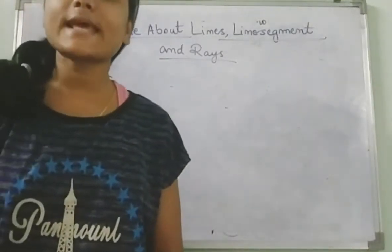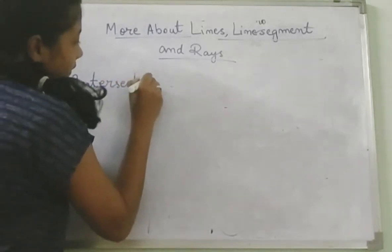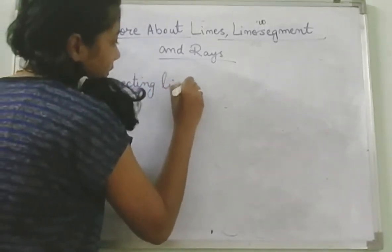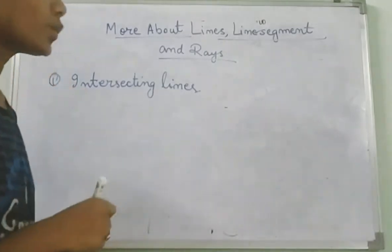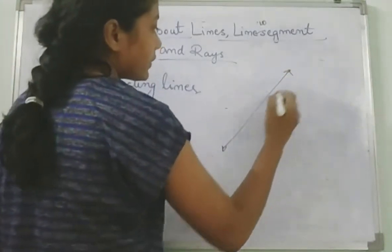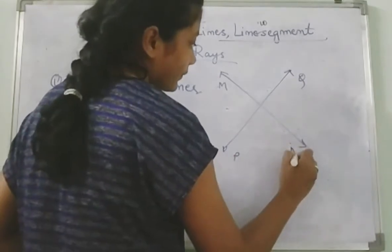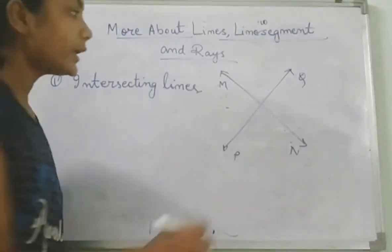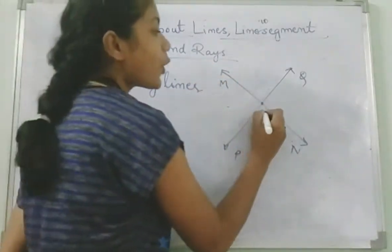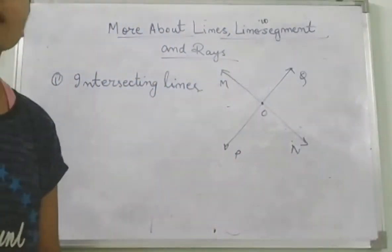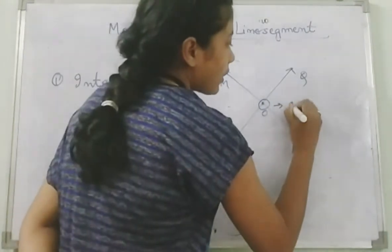First one is intersecting lines. When two or more lines meet each other — suppose this one is one line and this one is another line, M and P, Q — these two lines are crossing each other at one common point. This is their common point of intersection, the point where they are meeting, point O. So these two lines are called intersecting lines, and that point is called the point of intersection.